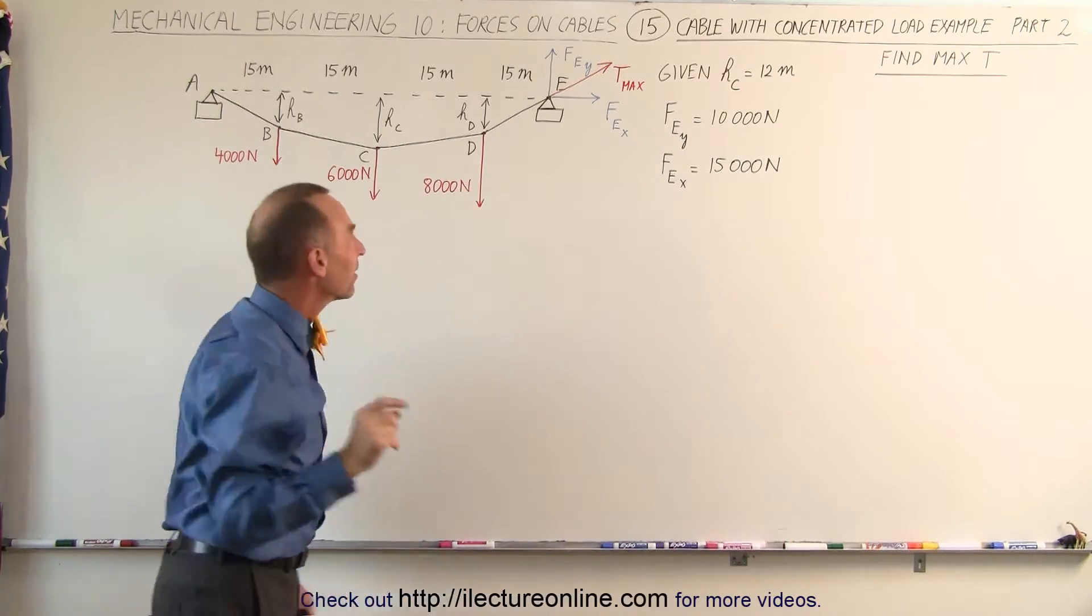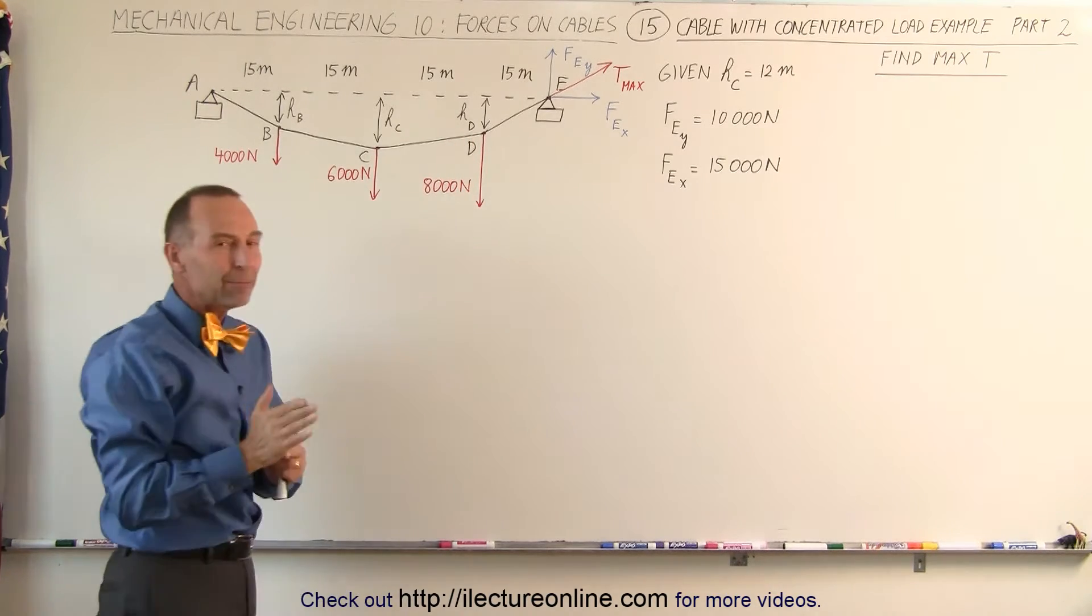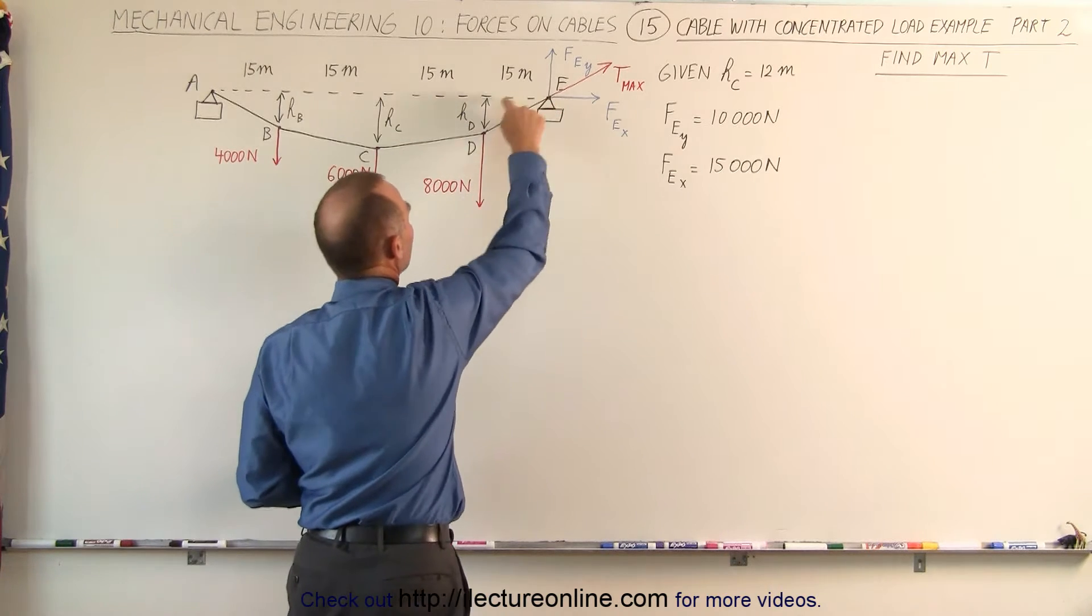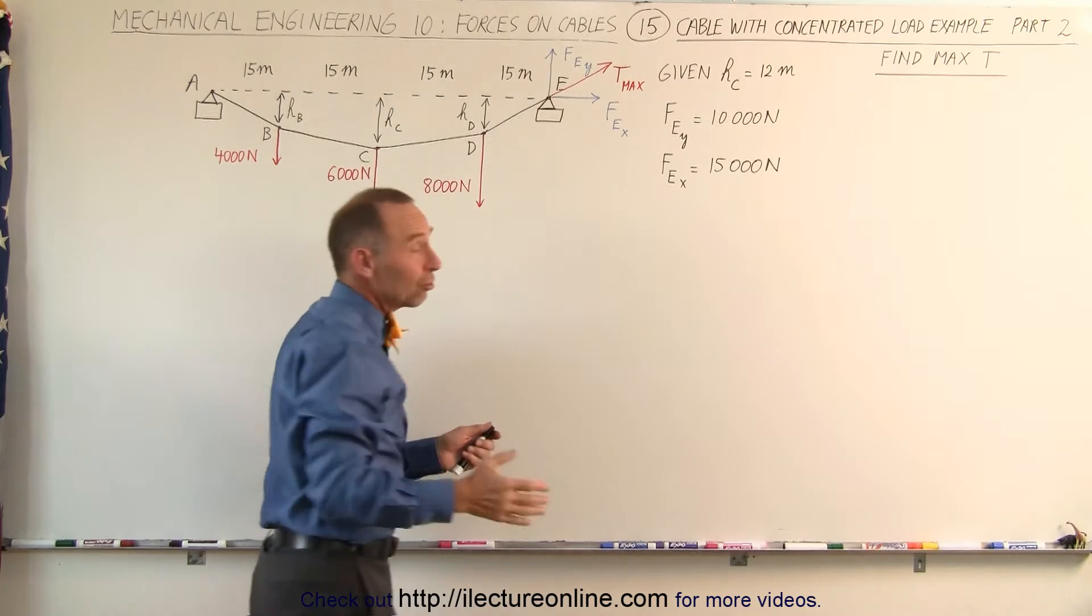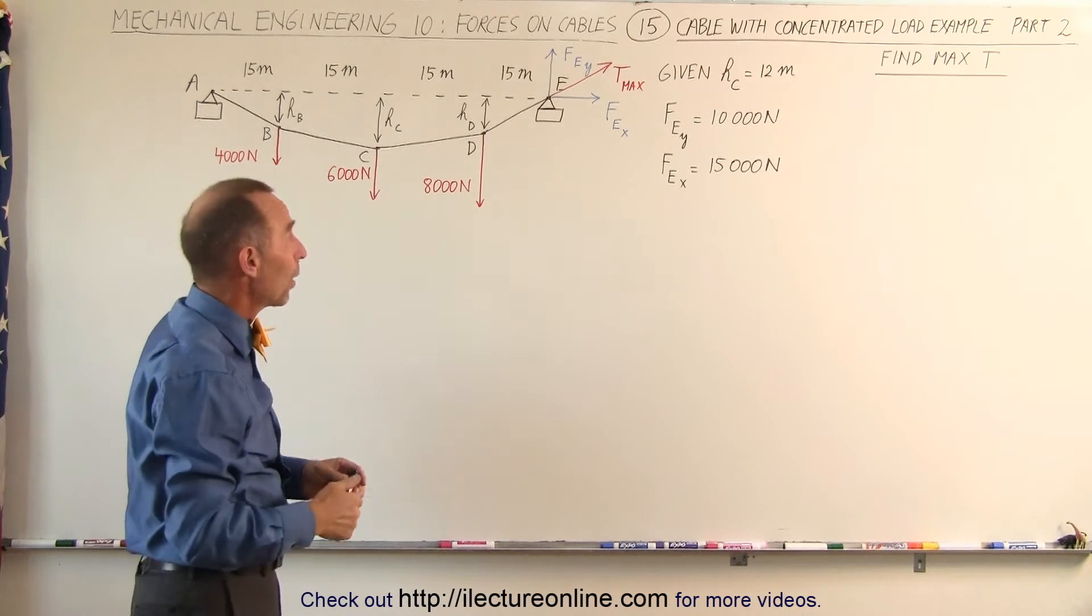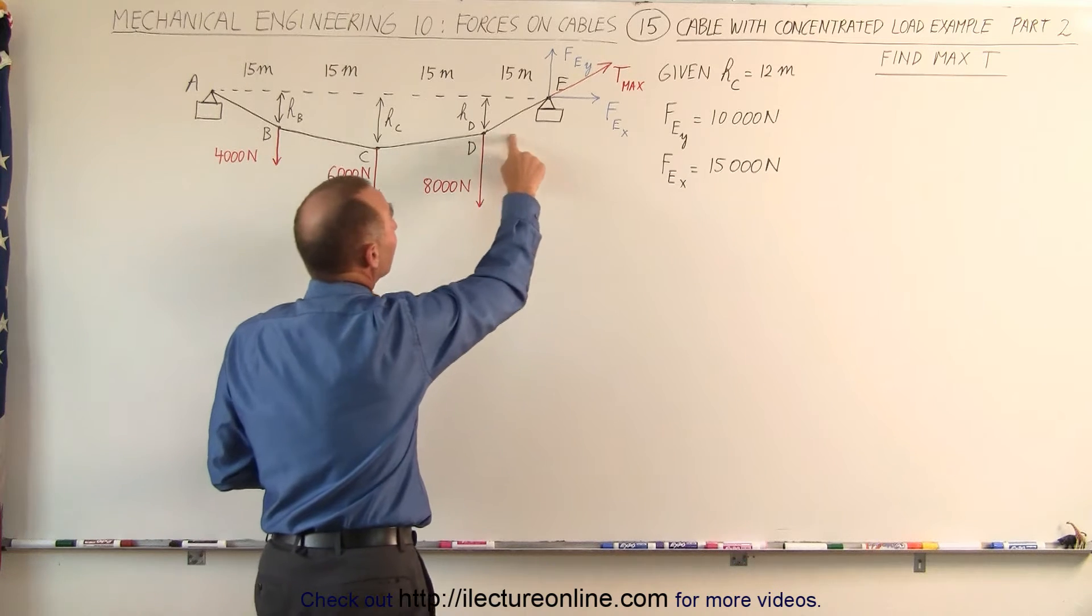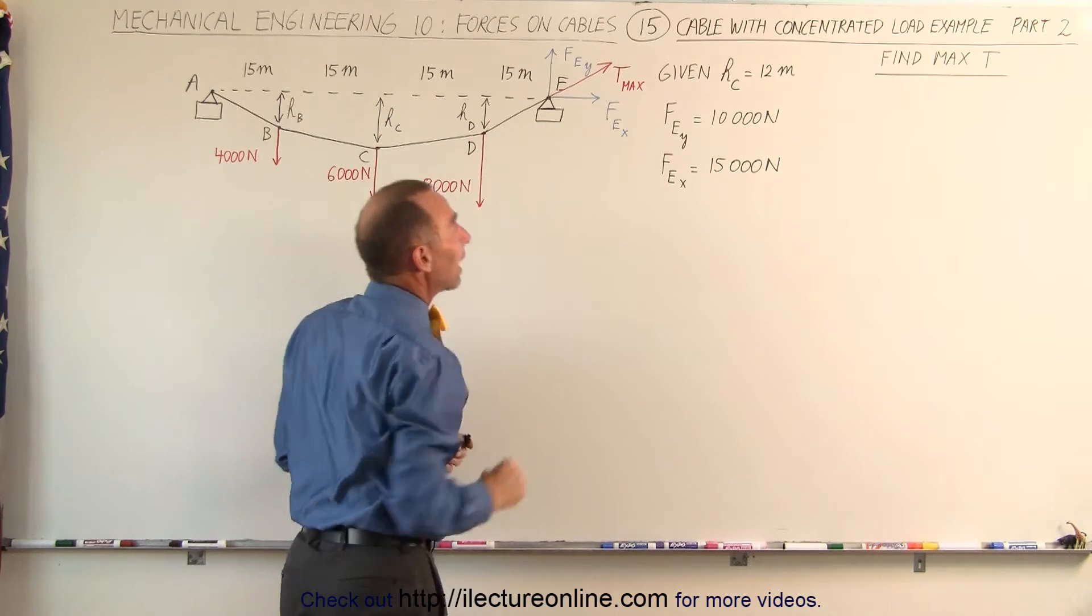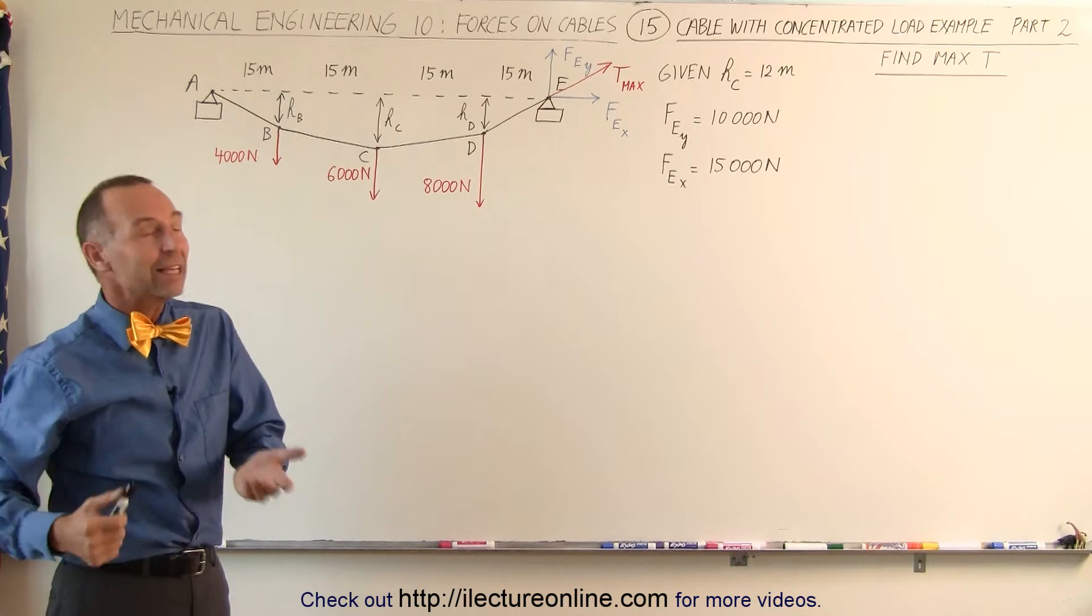Now the maximum value for the tension anywhere in the cable would be where the cable is its steepest, where the cable has the steepest slope, which would be this section right here. And since we already know what these two values are, we can actually find it using Pythagorean theorem quite easily. So we'll do it that way first and then we'll do it by trying to find the angle here, which means we need to find H sub D first, and then we'll use that angle to find hopefully the same result.